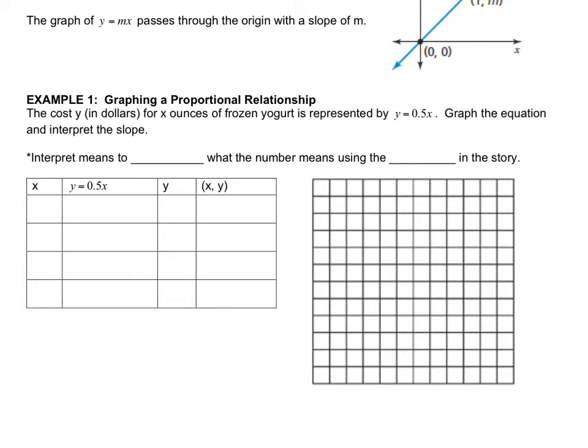What we did before when we graphed our equations, we plotted points and connected the dots. This doesn't tell us what x value to use, so we get to make up our own. Just as a throwback from our previous lesson, what does it mean to interpret? It means to explain what the number means using the labels in the story.